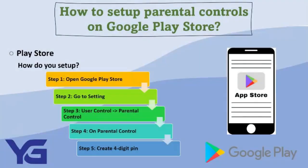Step 1: Open Google Play Store on your child's Android phone. Step 2: Head to the Settings menu by tapping the three-line icon on the top-left corner of the screen. Step 3: Under the User Controls heading, you will find the Parental Controls option. Tap to open it. Step 4: By default, parental controls are off. Toggle it on to set them up.